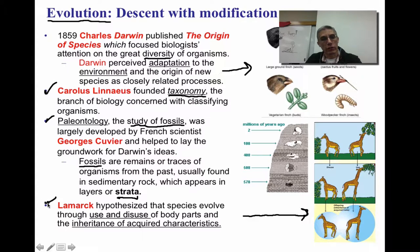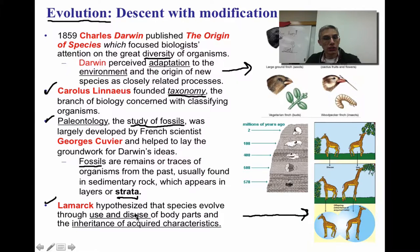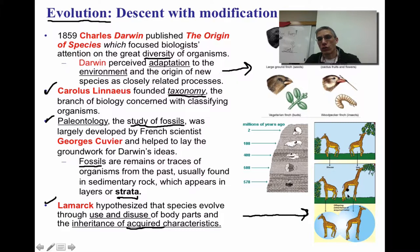Another important scientist is Lamarck, whose ideas were a little different and actually kind of far-fetched when compared to Charles Darwin. In his hypothesis, Lamarck thought that organisms would change over a period of time based on whether or not they would use or disuse various body parts. This was called the inheritance of acquired characteristics, and there is a famous diagram here that illustrates what Lamarck hypothesized.